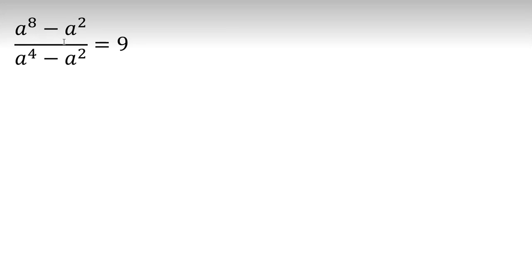a to the 8 minus a squared all over a to the 4 minus a squared equals 9, and we want to find a.